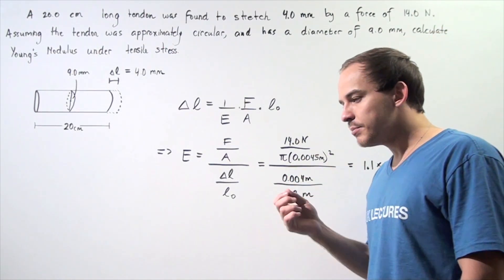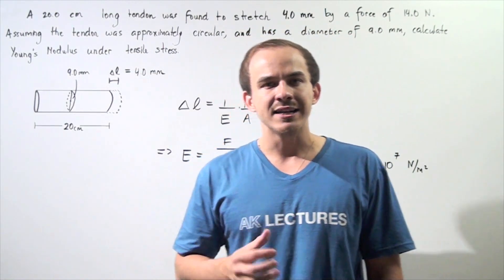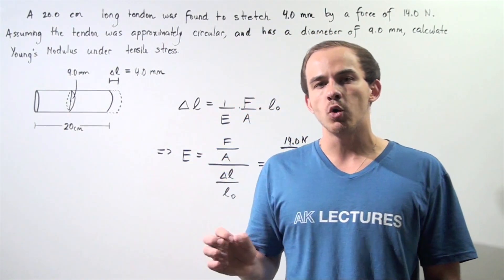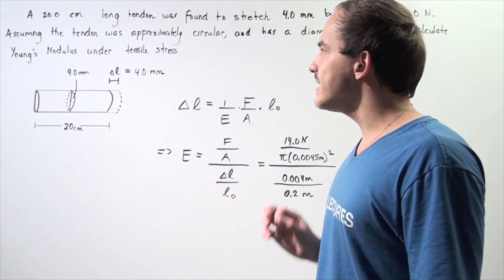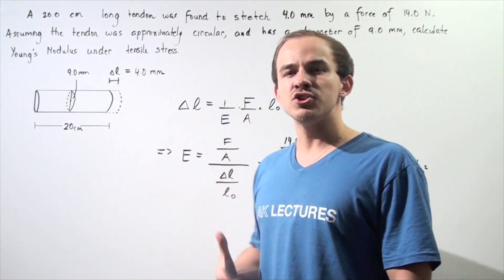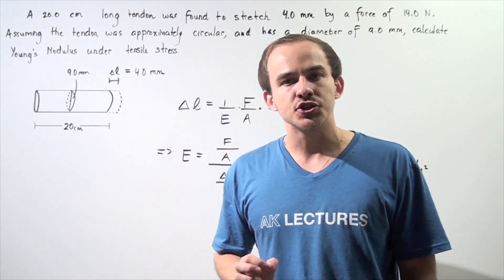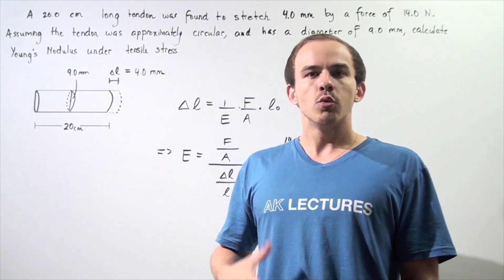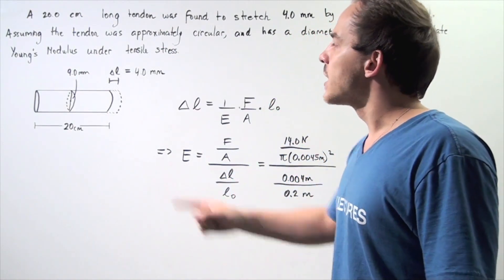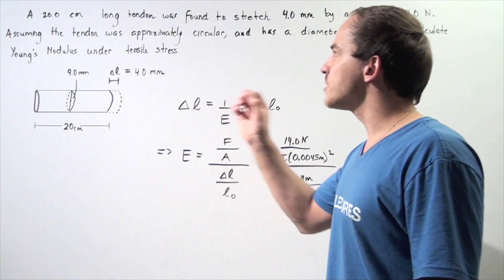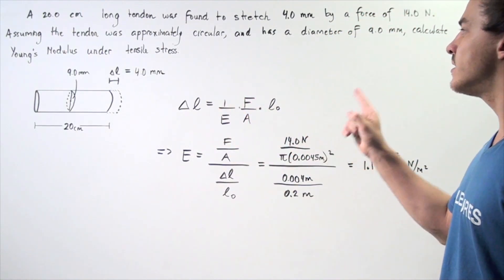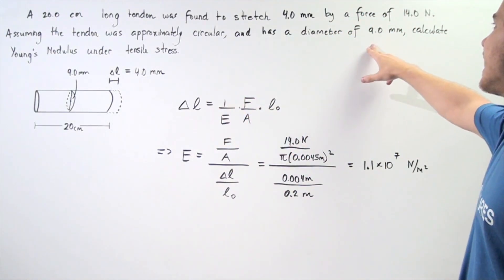A tendon is simply a fibrous connective tissue found in the body that connects muscle to bone. As we'll see in this example, the tendon is able to withstand very large tensile forces without actually fracturing. Assuming the tendon was approximately circular and the diameter of the tendon is 9 millimeters,